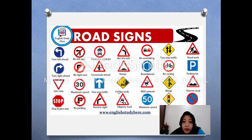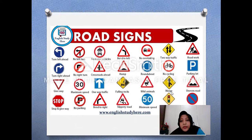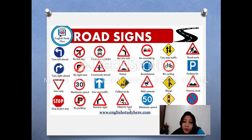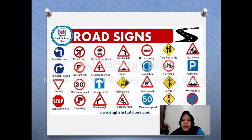One-way traffic. Falling rocks — kalau ada gambar seperti ini berarti rawan longsor. Wild animals — ada binatang liar, biasanya ada di dekat hutan. Merge, uneven road, stop and give way. No parking — tidak boleh parkir. Bend to right. Slippery road — dari gambarnya, artinya jalanannya licin. Minimum speed — the same sign but different picture. No waiting.